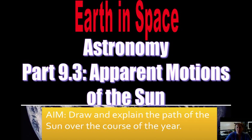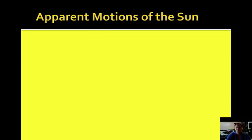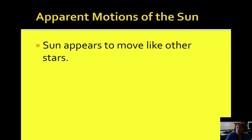Welcome back. This is section 9.3 of Astronomy, Apparent Motions of the Sun. Today's aim is to draw and explain the path of the sun over the course of the year. So first, let's talk about how the sun appears to move like other stars.